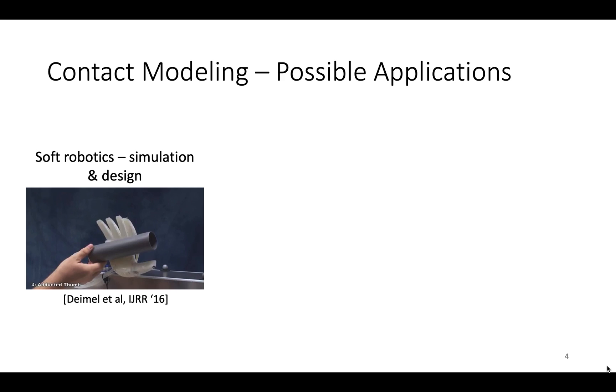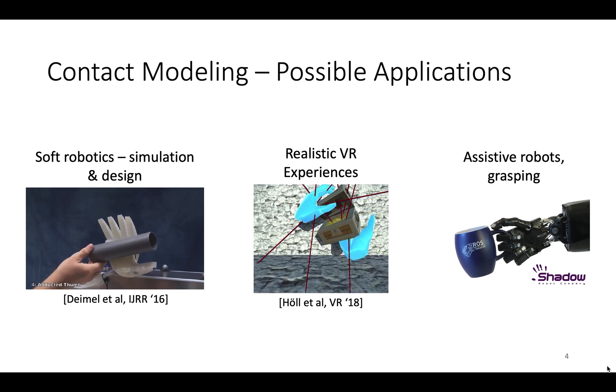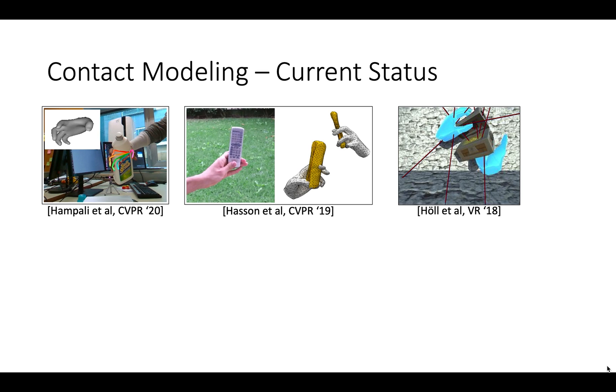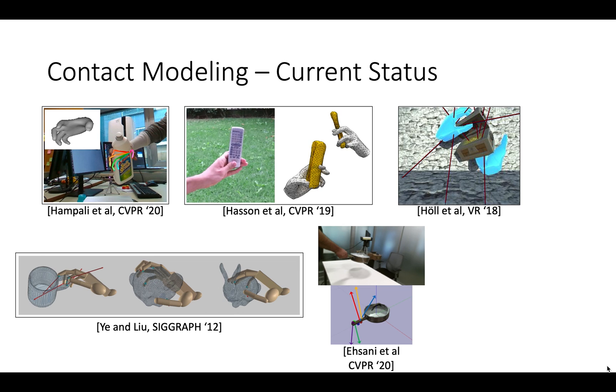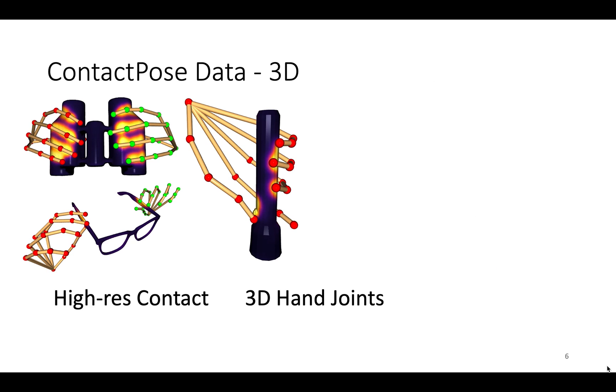Accurate hand-object contact models can help with simulation and design of soft robotic hand movements, in making hand and object motions more realistic in VR, and in robotic grasping. Recent vision algorithms have improved hand pose estimation during grasping but they lack proper contact estimation. In VR and in simulation, contact is often oversimplified as one point per fingertip. I will note that body-level contact reasoning is becoming popular for body pose estimation.